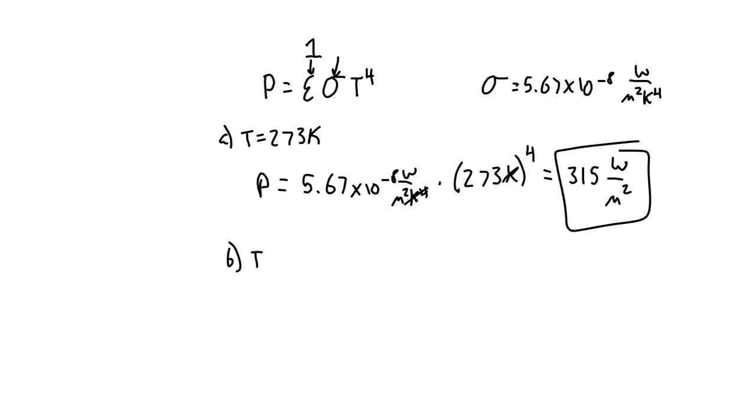For part B, we're going to do the same thing, but our temperature is 10 times as great, so we just have to multiply by 10 to the fourth, which is 10,000. So we're going to get 315 with four zeros after the fact, or 3,150,000 watts per meter squared.